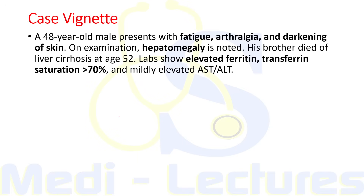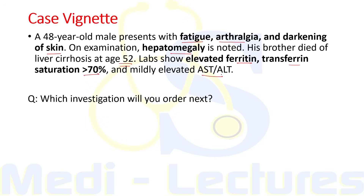Let's start this topic with a case. A 48-year-old male presents with fatigue, arthralgia, and darkening of skin. On examination there is hepatomegaly. His brother died of liver cirrhosis at age 52. Labs show elevated ferritin, transferrin saturation more than 70%, and mildly elevated AST/ALT. What investigation will you order next? At the end of the presentation I hope we will be able to approach this case.